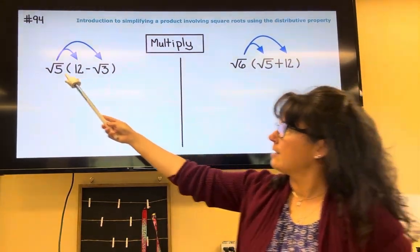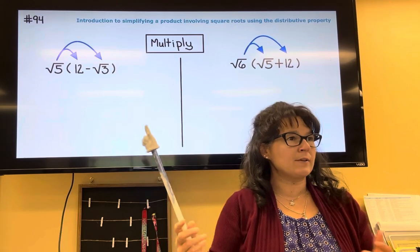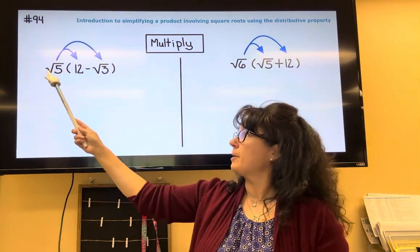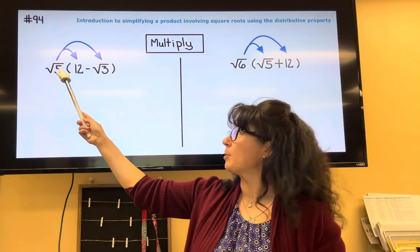We're gonna multiply the monomial times the binomial. We have some roots involved. I'm gonna use the distributive property. The square root of 5 is out front of parentheses.